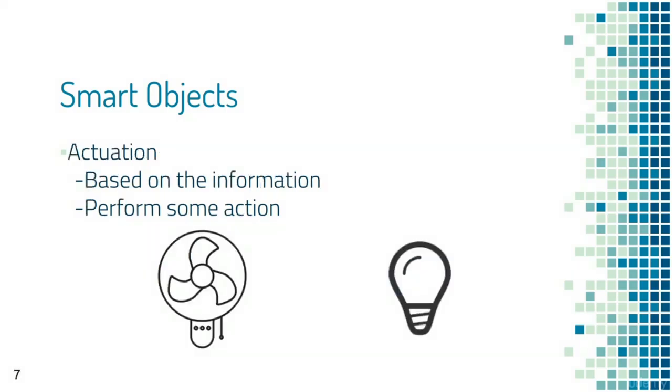These smart objects can be actuators as well. Actuators can change the state of the environment based on the values generated by sensors. For example, a sensor can measure the ambient light intensity while an actuator — in this case a lamp — can be turned on to make streets brighter in a smart city application.